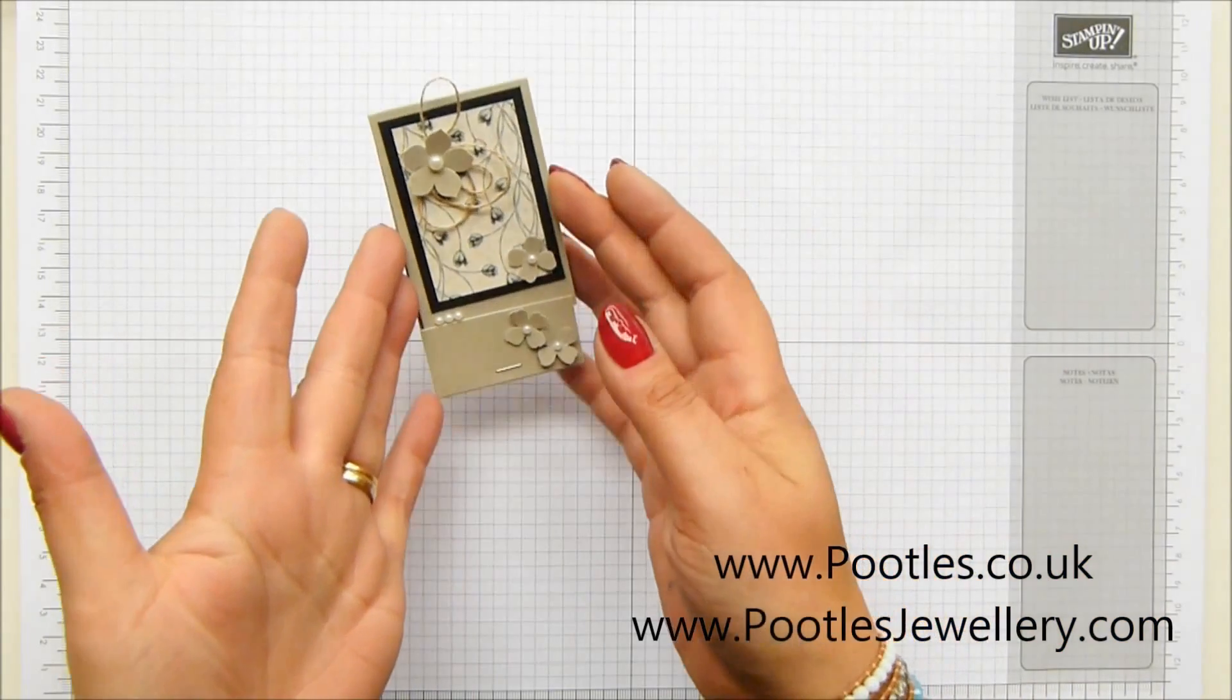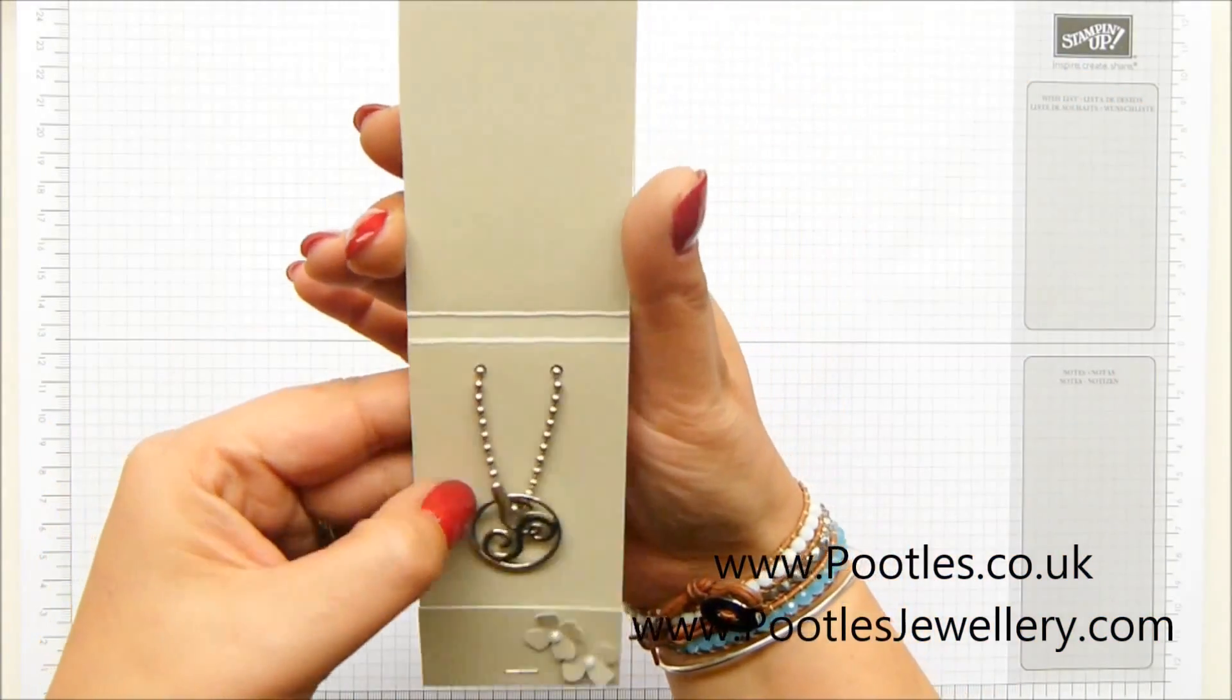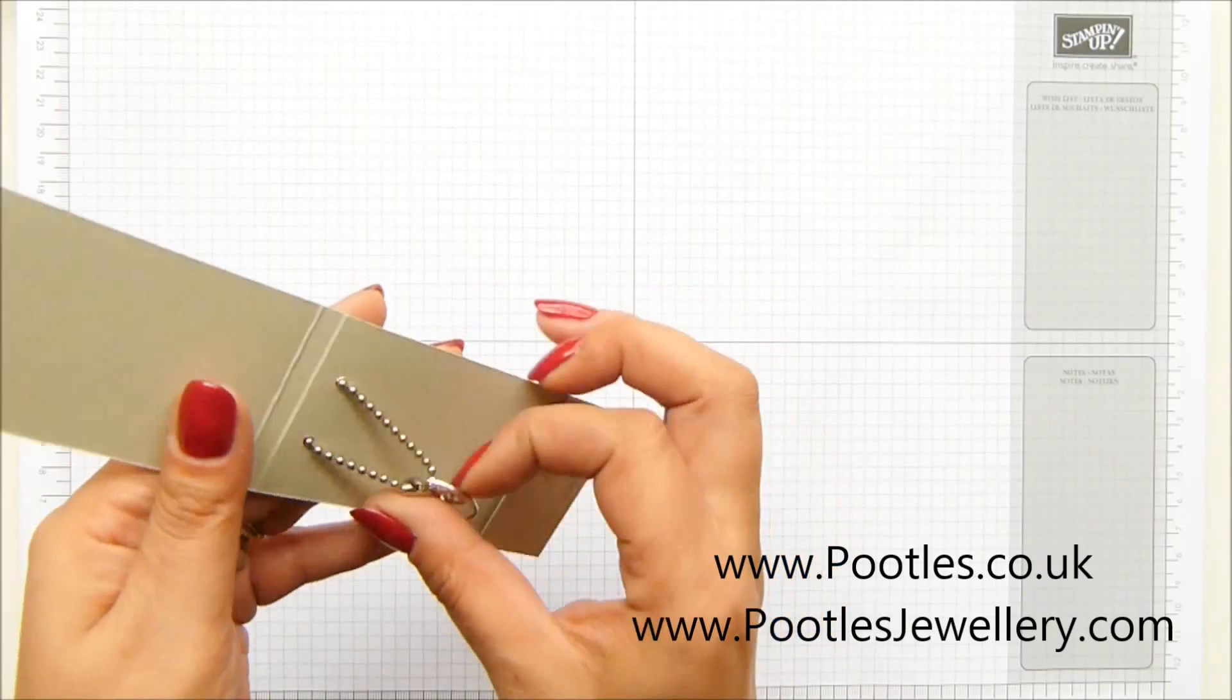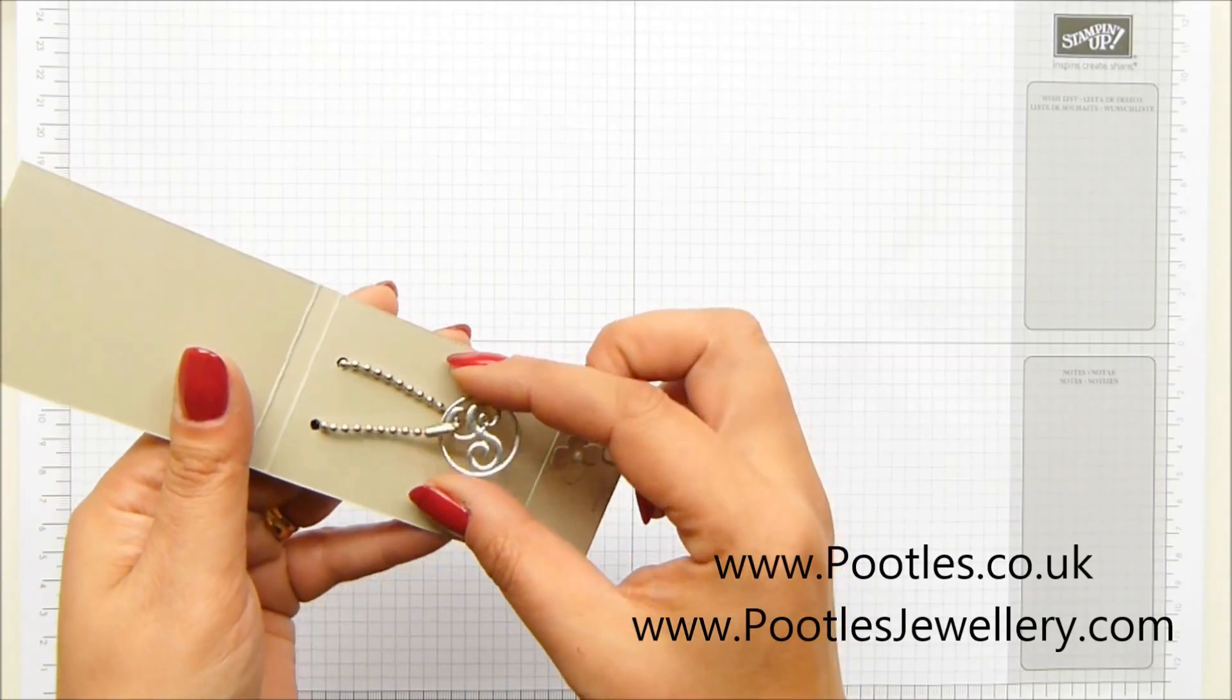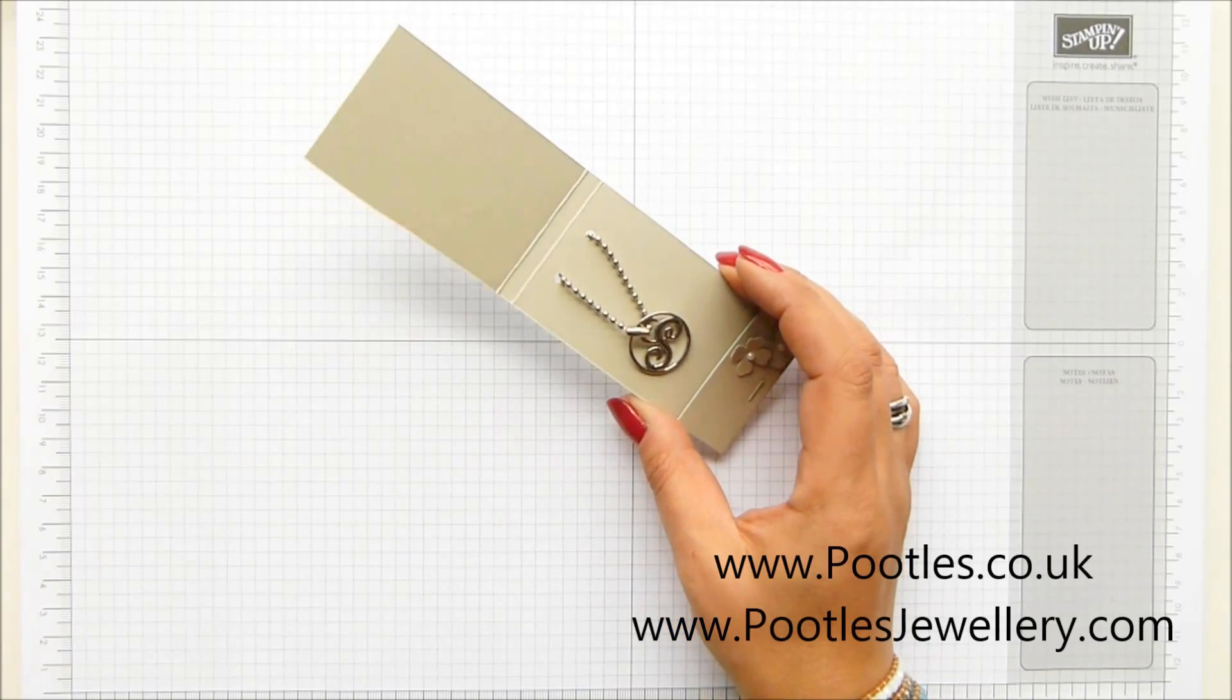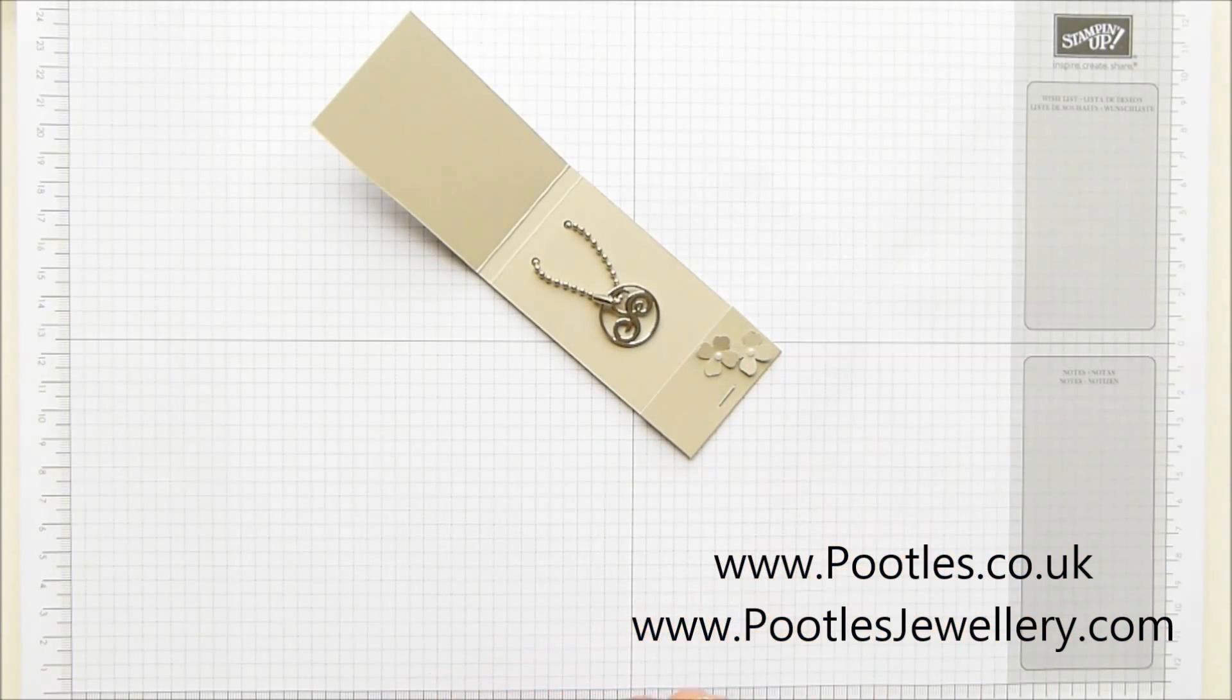And today's project is a matchbook monogram keyring holder. And the monogram keyring, well actually just the monogram, is the South Hill product. It's a monogram screen that you would normally put inside one of our larger lockets, but I like to do things a little bit differently.